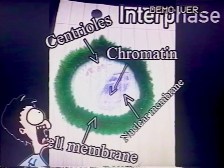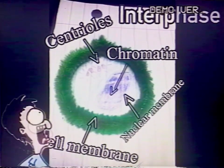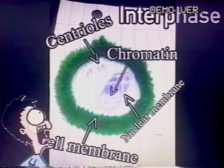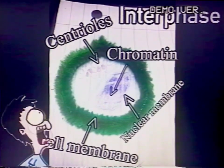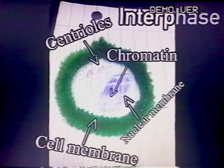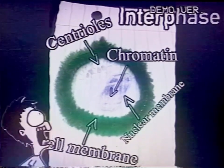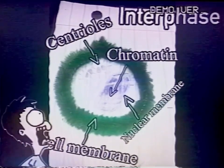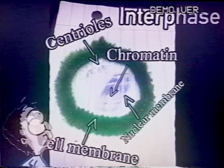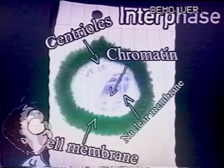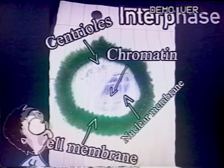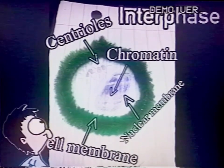The first step in the mitosis process is interphase. During interphase, the cell grows and replicates its DNA. Eventually, the cell centrioles will be formed. The process of interphase happens in phases G1, S, and G2.